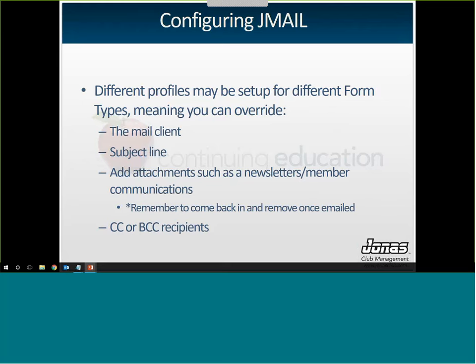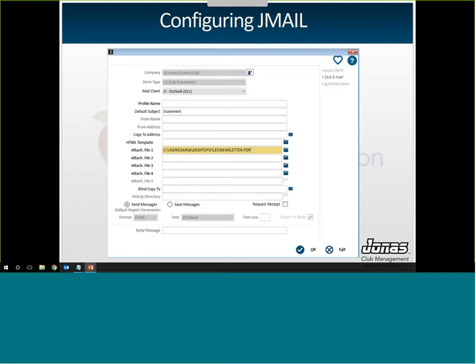Different profiles can be set up for different form types. You can override the mail client — Outlook versus SMTP — the subject line, and add attachments. For statements, you might want to add a newsletter. For tee times, maybe a reminder about upcoming events in the pro shop. For banquets, maybe a copy of your standard banquet policies. You can also CC or blind CC recipients — for example, every time a confirmation is sent, it also goes to your banquet manager or golf pro. Here's an example: company selected, form type C1 club statements, mail client set to Outlook, default subject is 'statement,' and a newsletter is attached to this email.